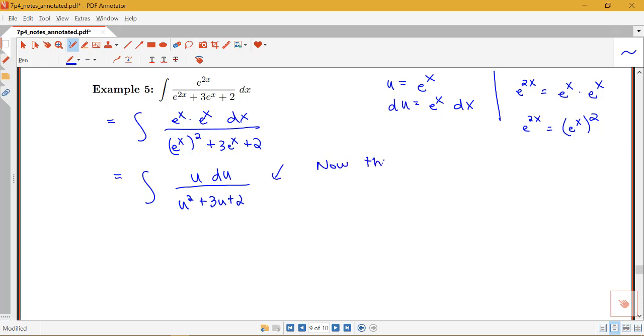Now this is a rational function, and we can think about using our techniques for dealing with rational functions. Now you could do a trig substitution on that after completing the square, but it will be easier to use partial fraction decomposition. So notice that I do have a proper rational function here. I have u over u squared plus 3u plus 2, and I can factor that denominator.